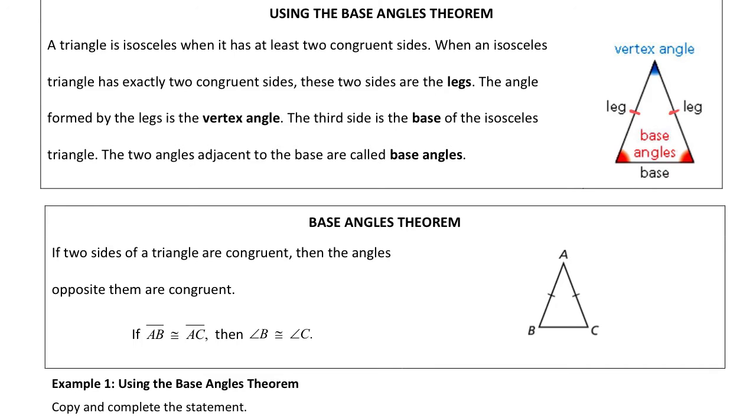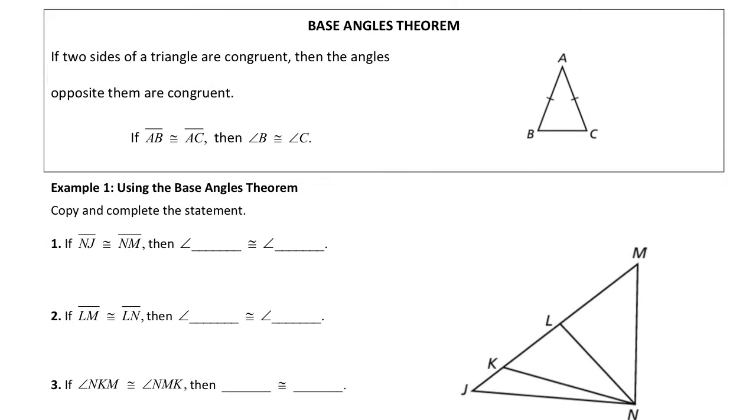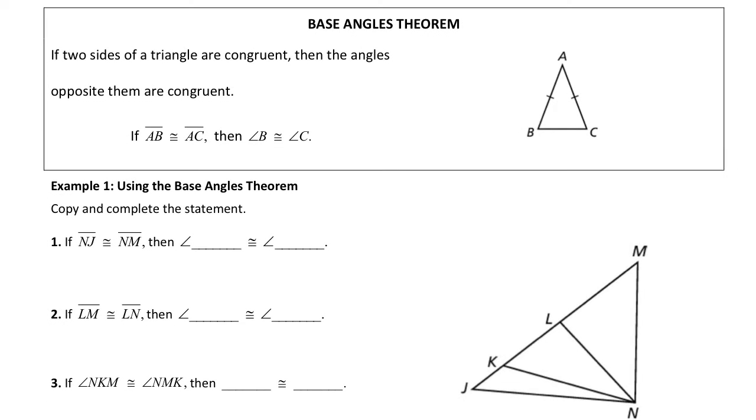The main thing with an isosceles triangle is this base angles theorem states if two sides of a triangle are congruent, then the angles opposite from them are congruent, meaning if I have AB and AC congruent, that means angle B is congruent to angle C.